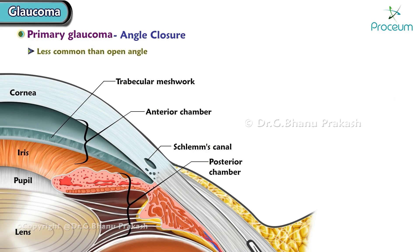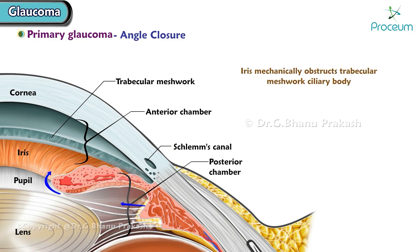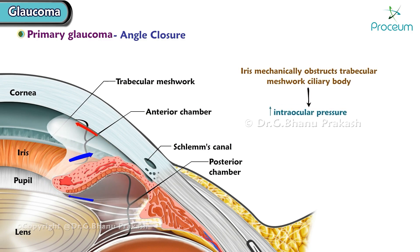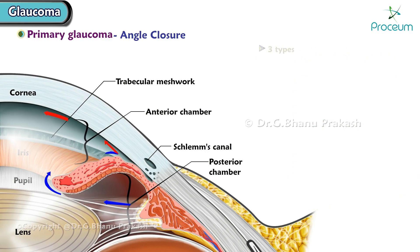Primary angle closure glaucoma is less common than open angle glaucoma but carries three times more risk for bilateral blindness. It occurs when the iris mechanically obstructs the trabecular meshwork and ciliary body, leading to increased intraocular pressure. The most noted pathogenesis is pupillary block caused by a mid-dilated pupil.